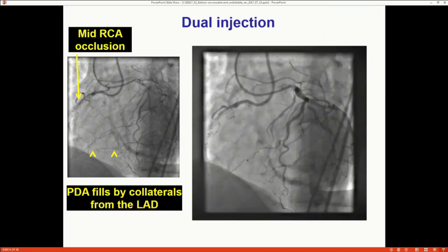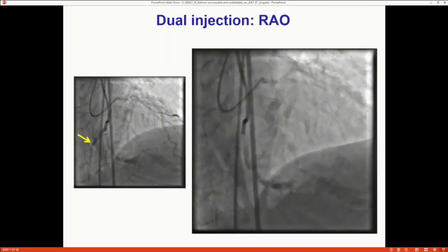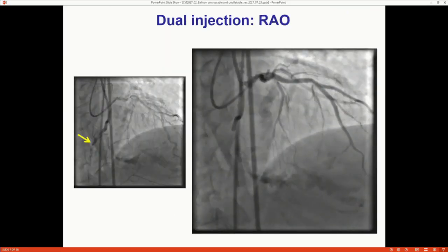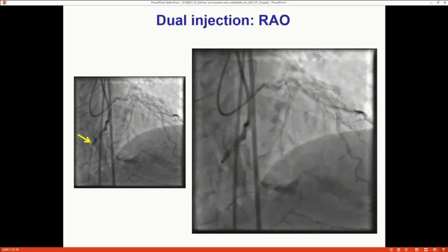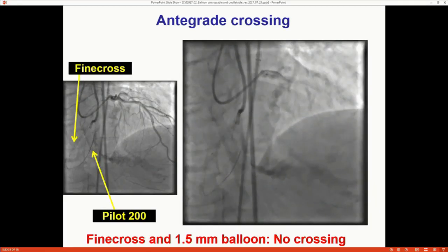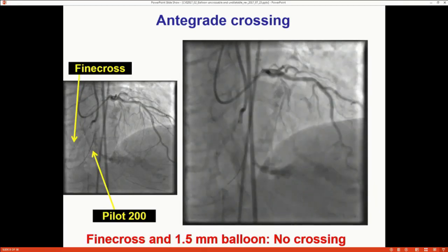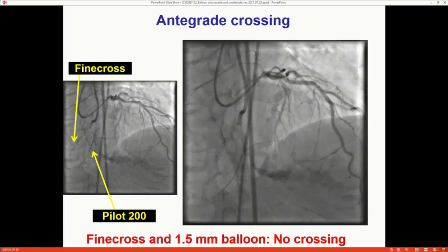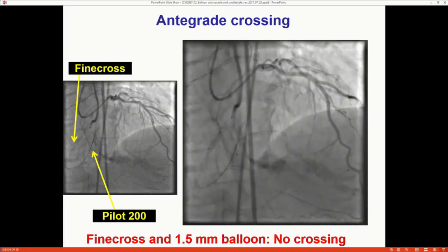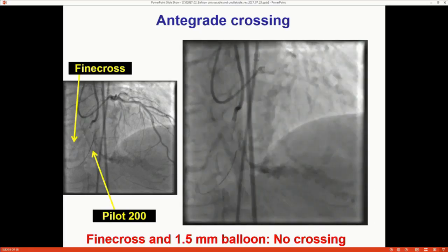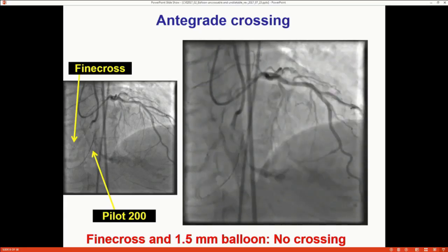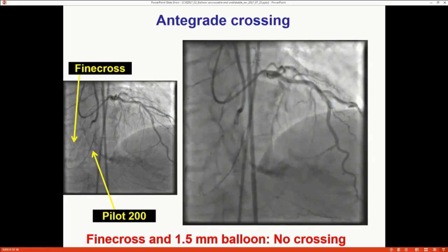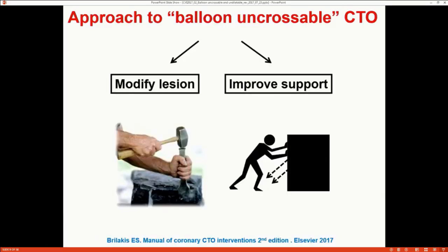This is an example case — an RCA that was heavily calcified, as you can see, and these are the lesions where things can go bad. Interestingly, it was crossed very quickly with the PILOT 200, but then the problem is nothing else would go: a microcatheter, a fine cross, or a 1.5-millimeter balloon would not go.